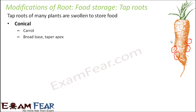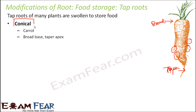You can actually observe tiny thin root hairs on the carrot, which tell us that it is a root. The carrot is also swollen and stores food. Its shape is in the form of a cone — it has a broad base on one side and tapers toward the apex, so one side is broad and the other side is thin and pointed.